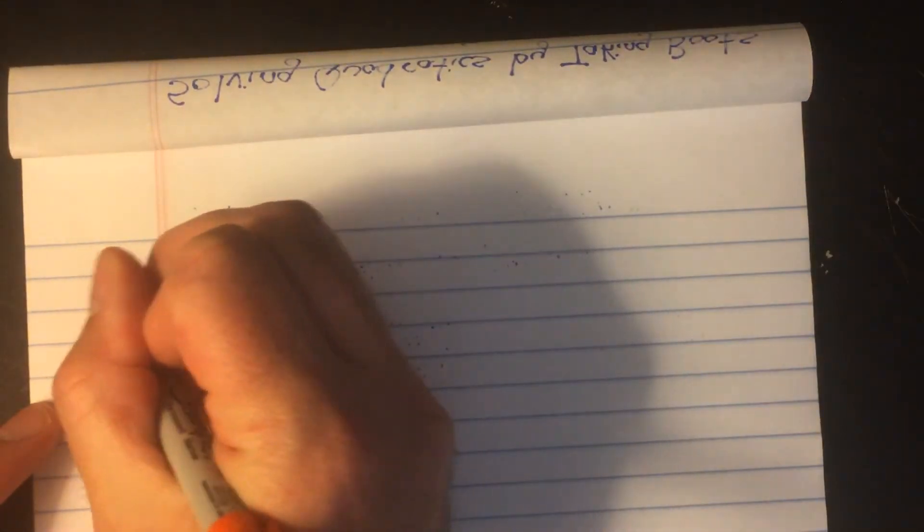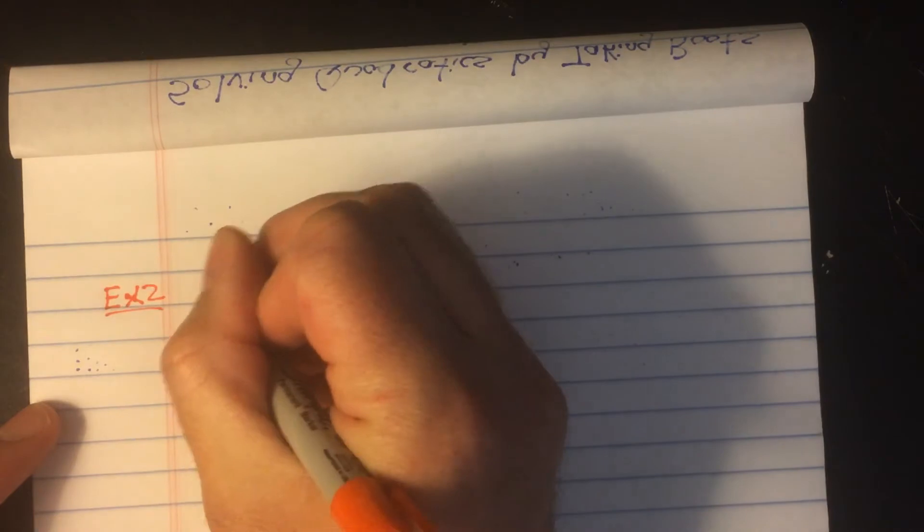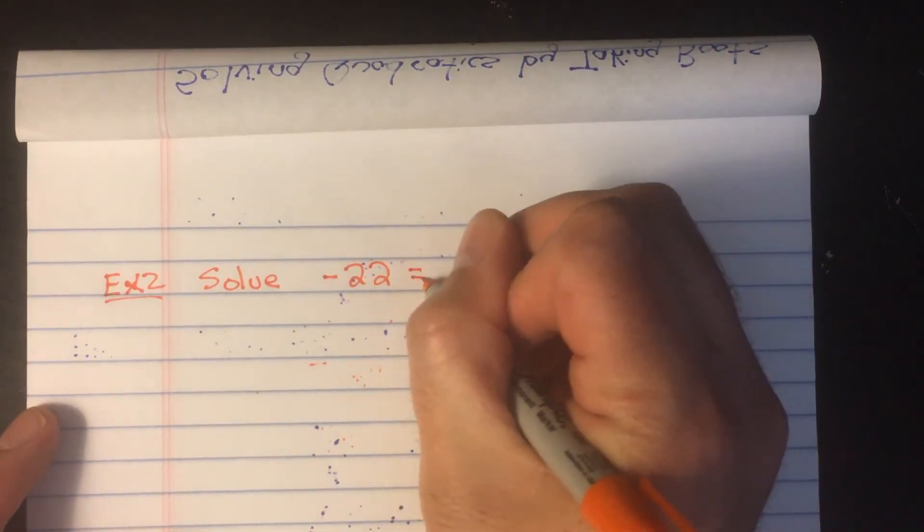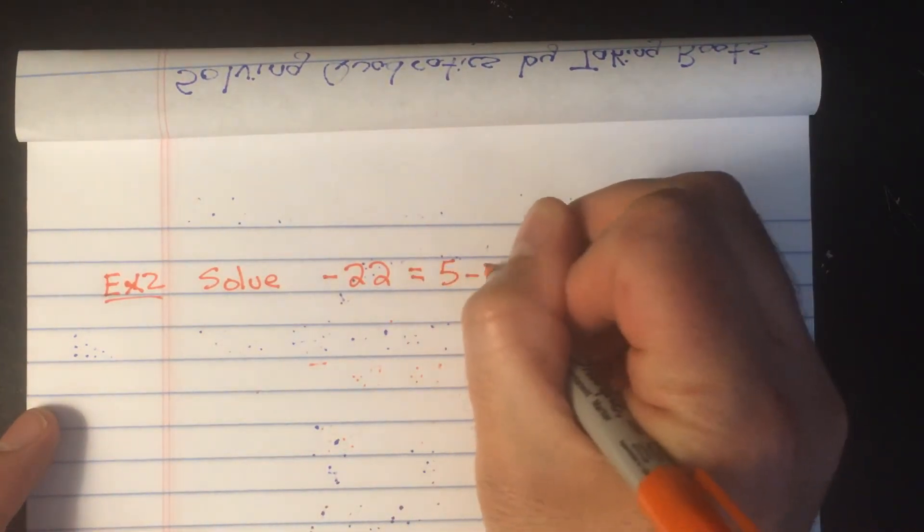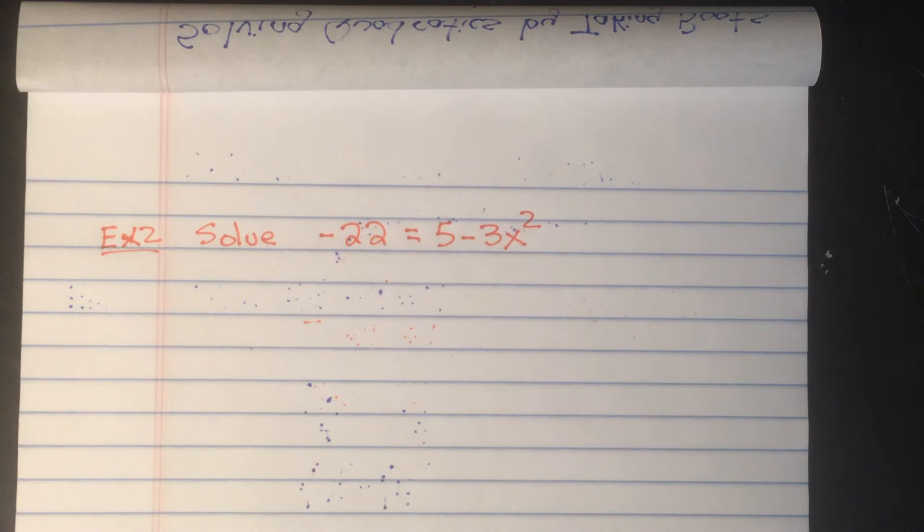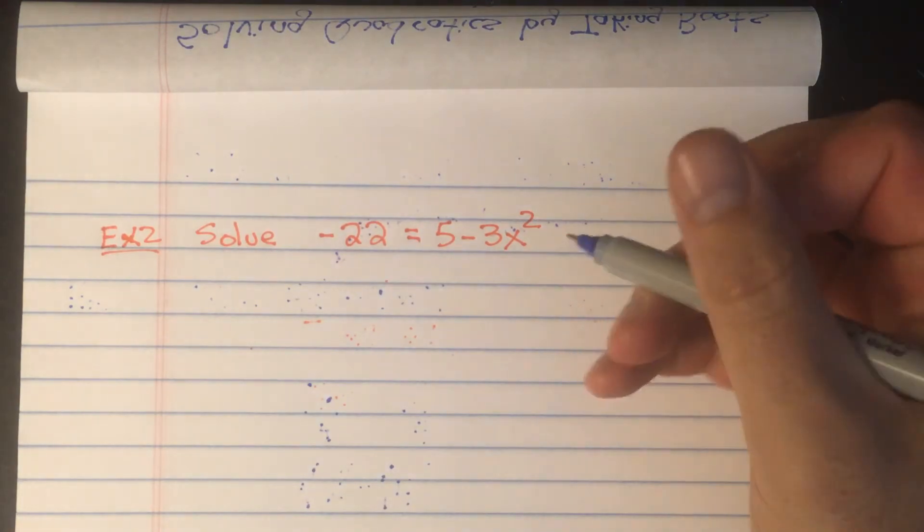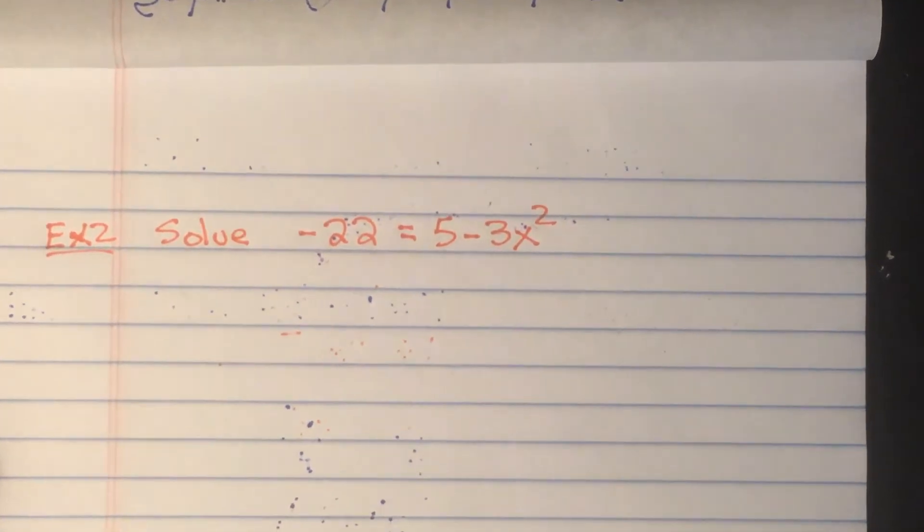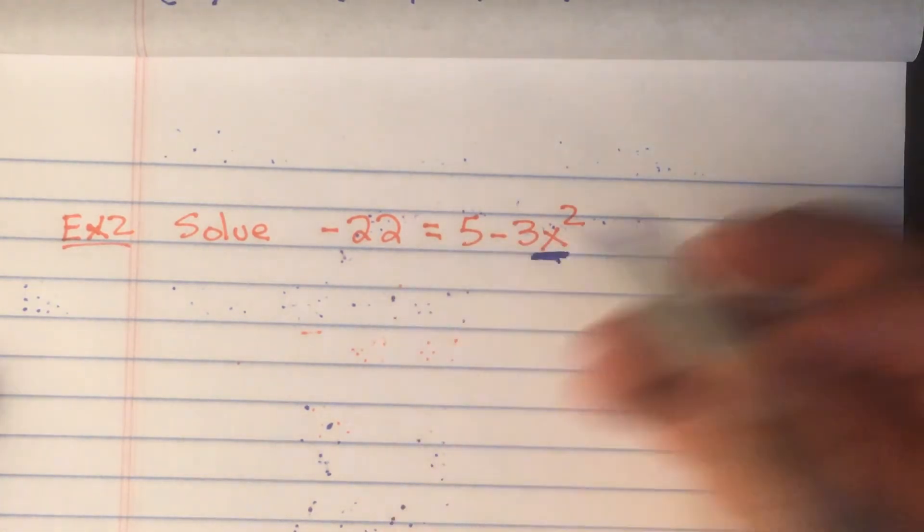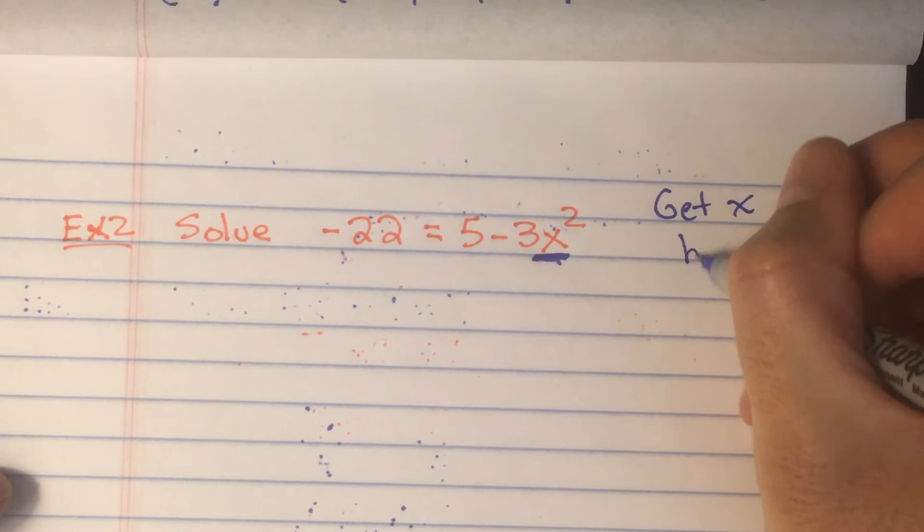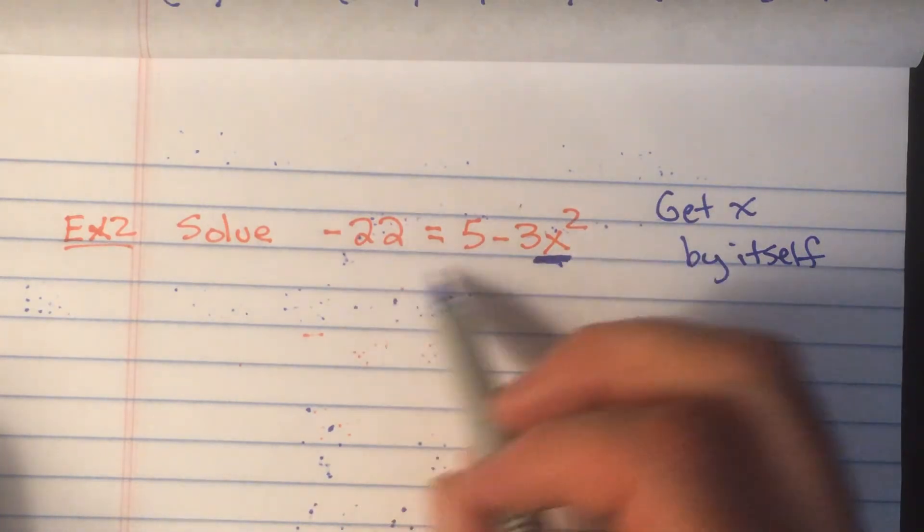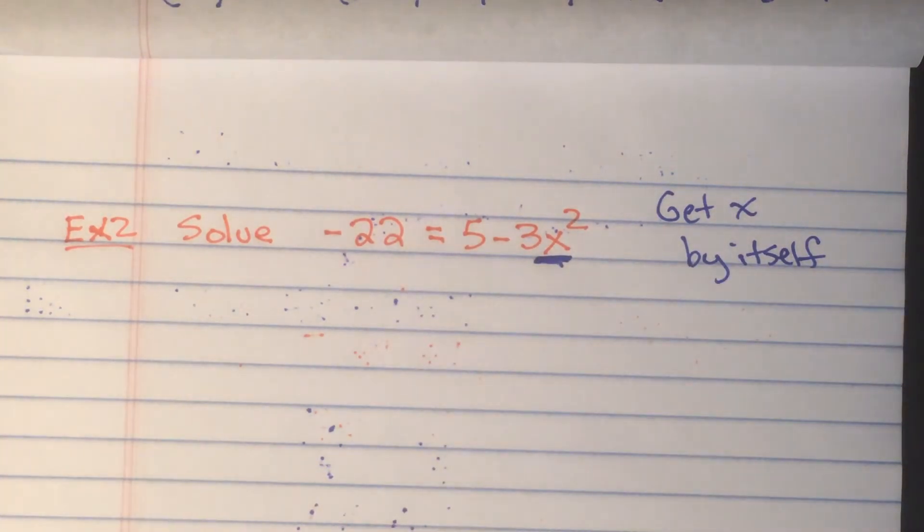If we asked you to solve example two: solve negative 22 equals 5 minus 3x squared. Negative 22 equals 5 minus 3x squared. And we took a look at that. We're going to do it the same way. We're going to solve by taking roots. Now the reason I know I can take roots is if I look, there's an x here, but there's no other x's anywhere else. So I can get x by itself. It's really important to know though that that only works if there's an x squared and no other x's. If there's another x, we're going to have to use a different way to solve it.